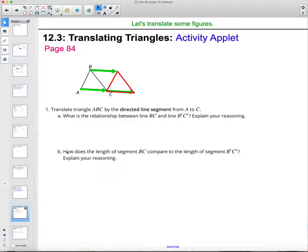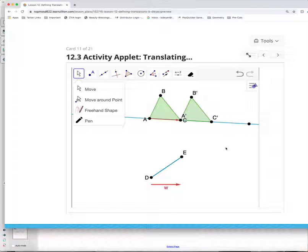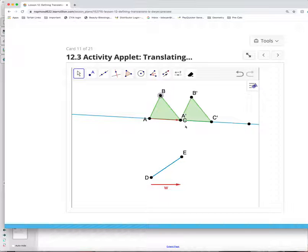Alright, so then how does the length of BC compare to B prime C prime? So how does the length from here to here, so B to C, compare to B prime C prime? So rigid transformation, so those should be exactly the same. So B to C should be the same as B prime to C prime.